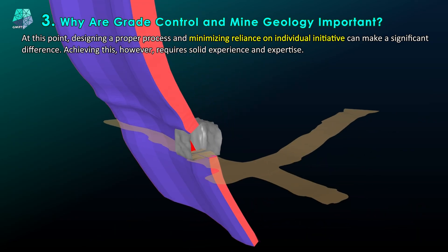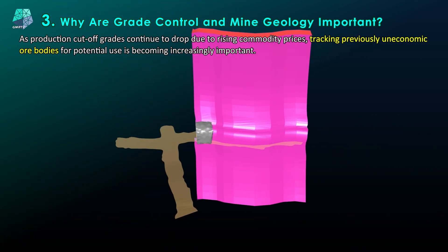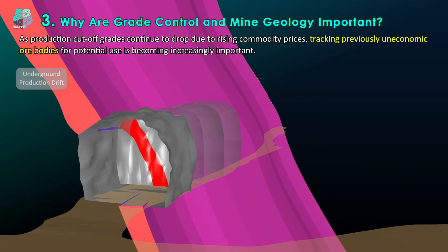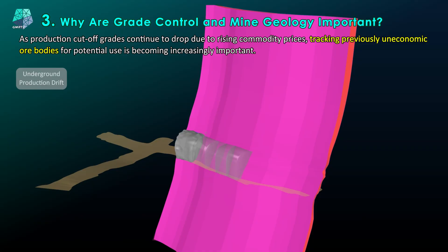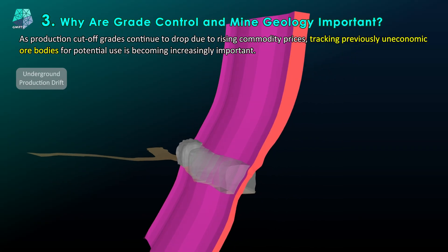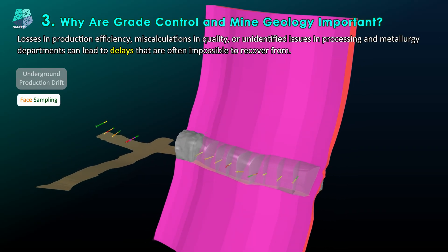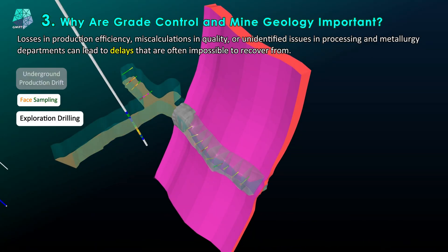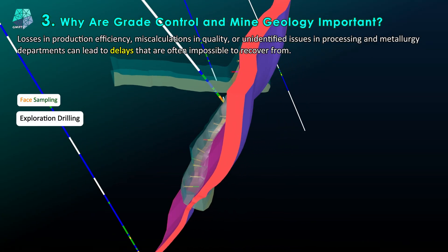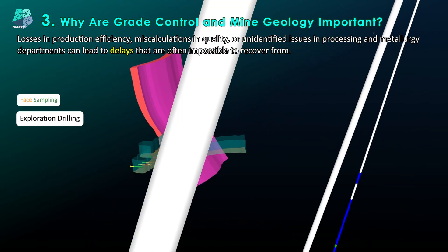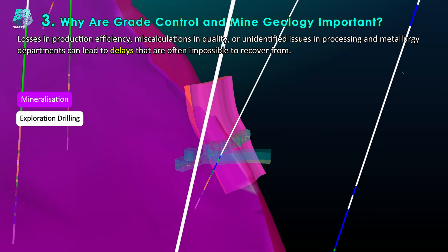Achieving this, however, requires solid experience and expertise. As production cutoff grades continue to drop due to rising commodity prices, tracking previously uneconomic ore bodies for potential use is becoming increasingly important. Losses in production efficiency, miscalculations in quality, or unidentified issues in processing and metallurgy departments can lead to delays that are often impossible to recover from.